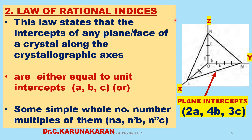Now let us define the law of rational indices. Let us consider a plane L, M, N in a crystal. This plane makes an intercept of 2A along the X axis, where A is the unit intercept. The plane L, M, N makes an intercept of 4B along the Y axis and an intercept of 3C along the Z axis. So the plane intercepts 2A, 4B, and 3C along the three crystallographic axes X, Y, and Z.